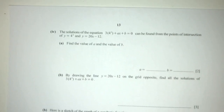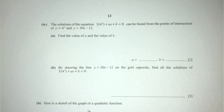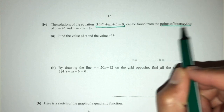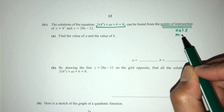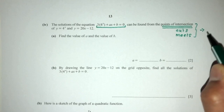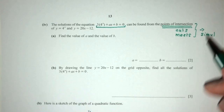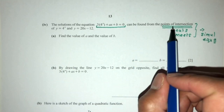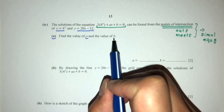Now let's move on to part 4. I have been seeing this kind of question pretty often, so I'm sure you will get something similar in your exam. The solutions to this equation can be found by the points of intersection. Whenever you see points of intersection, or curves that meet, it always leads to simultaneous equations — keep that in mind. It is a point of intersection of this curve and this line. For part 1, find the value of a and b in this equation.